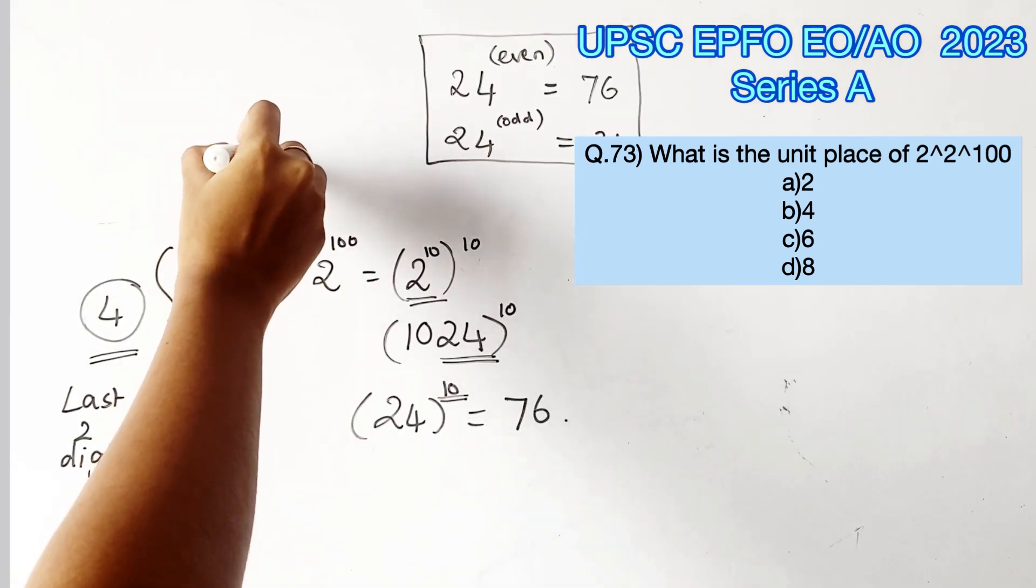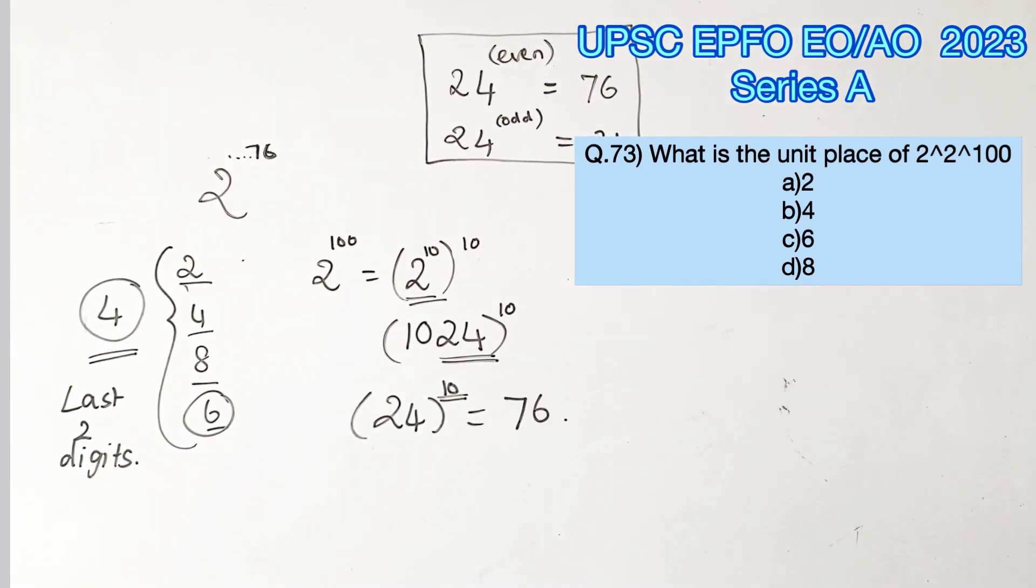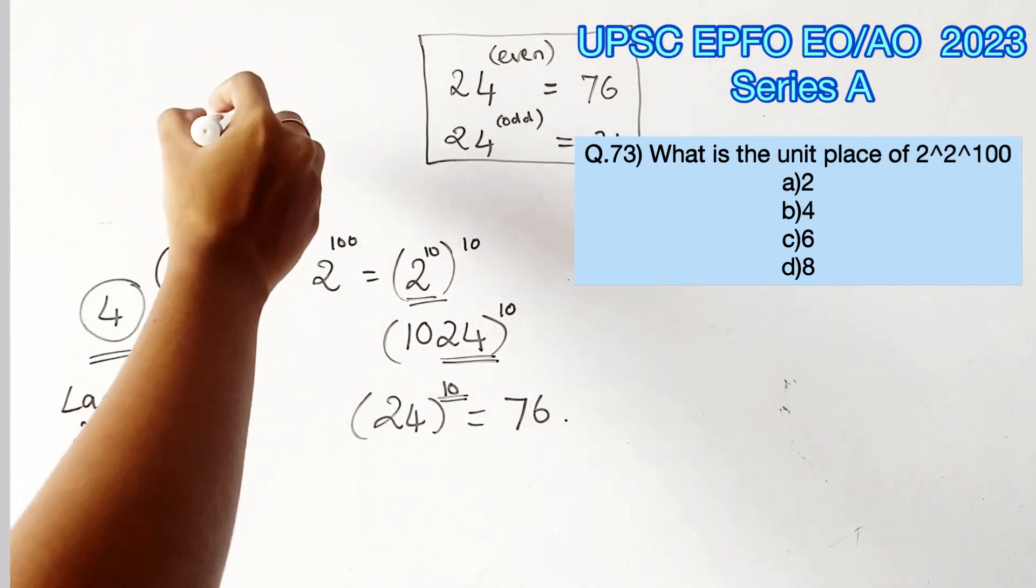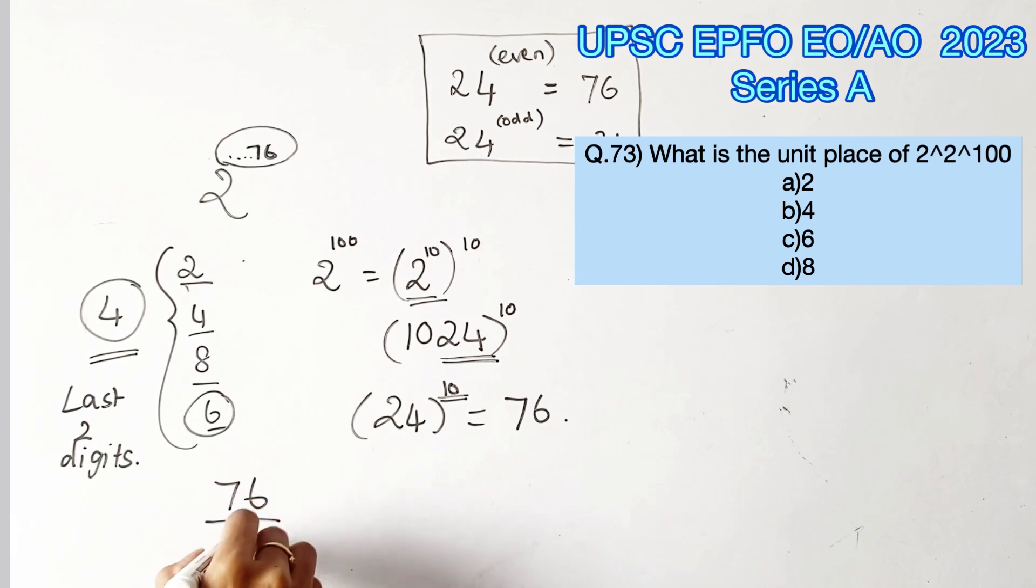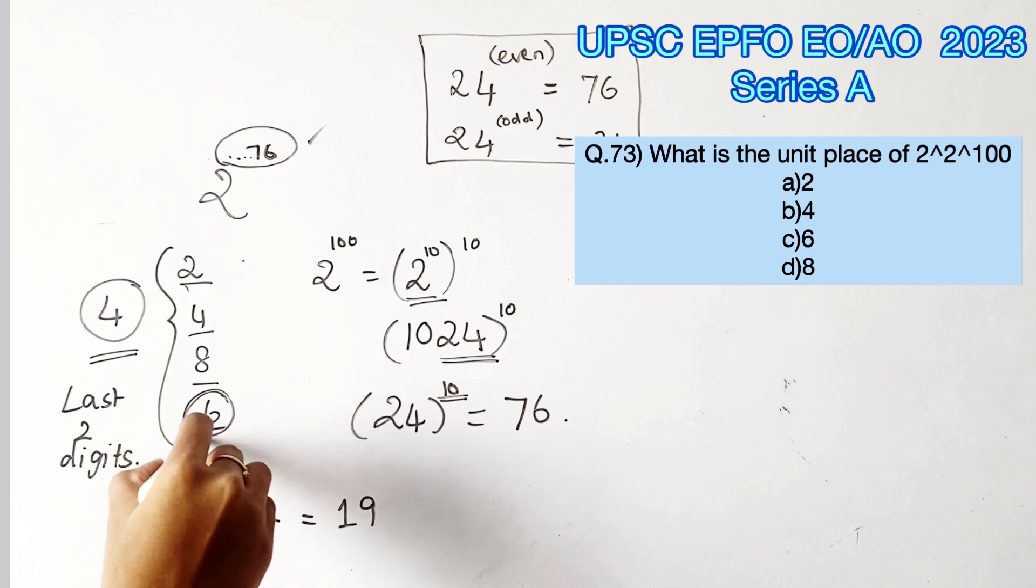Which means 2 power 100 is nothing but a number that ends with 76. Now all we have to do is divide this with 4 and find the unit's digit. Dividing 76 by 4, we get 19 and remainder 0. Therefore, the last digit should be 6. Which means option C is the right answer.